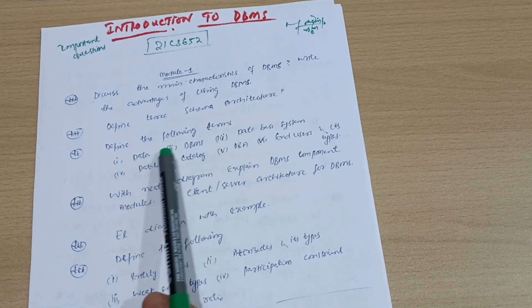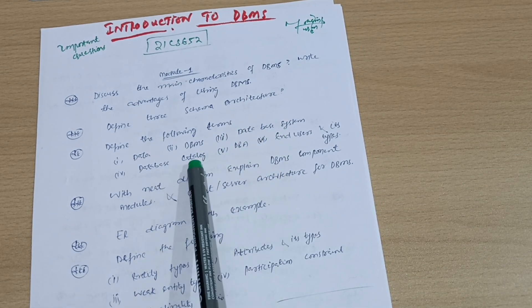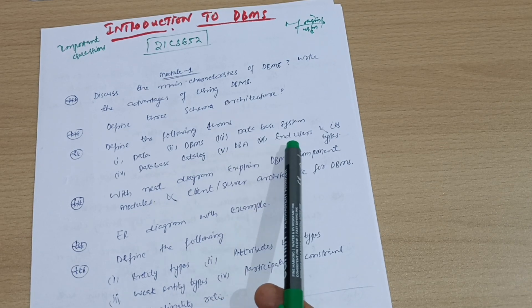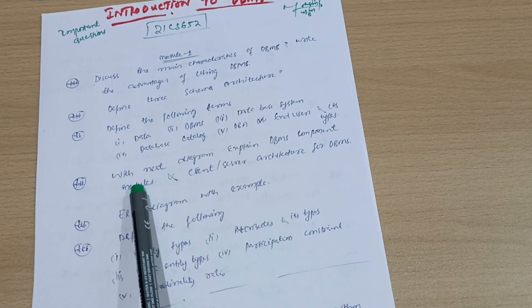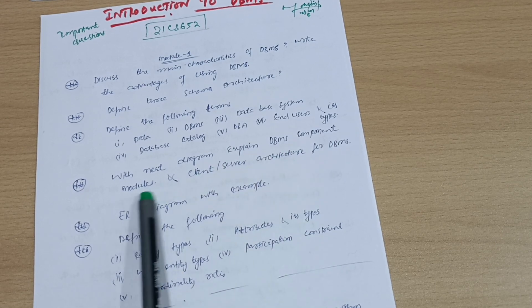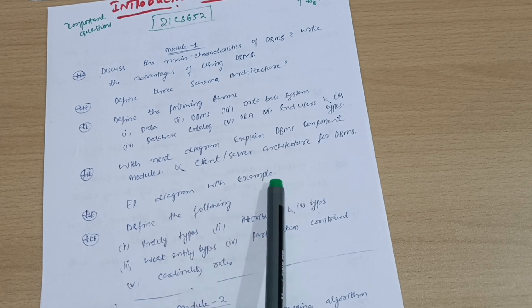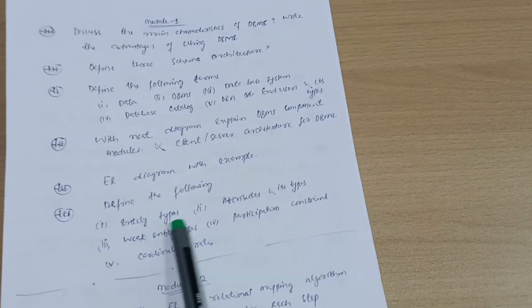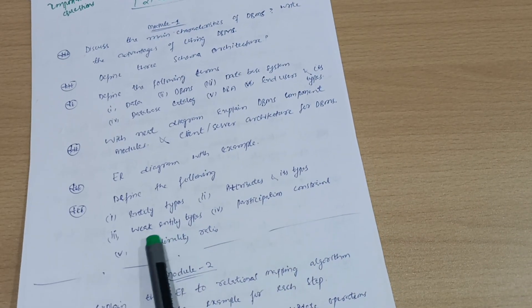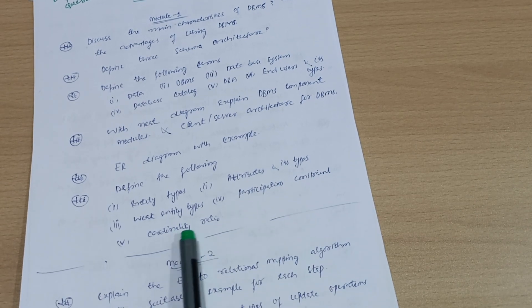These are super important: Define the following terms - data, DBMS, database system, database catalog, DB end users and its types. With a neat diagram, explain DBMS component modules and client-server architecture for DBMS. ER diagram with example. Define the following: entity types, attributes and its types, weak entity types, participation constraints, and cardinality ratio.